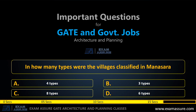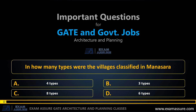Next question. In how many types were the villages classified in Mansara? Option A: 4 types. Option B: 3 types. Option C: 8 types. Option D: 6 types. The correct answer is: 8 types.